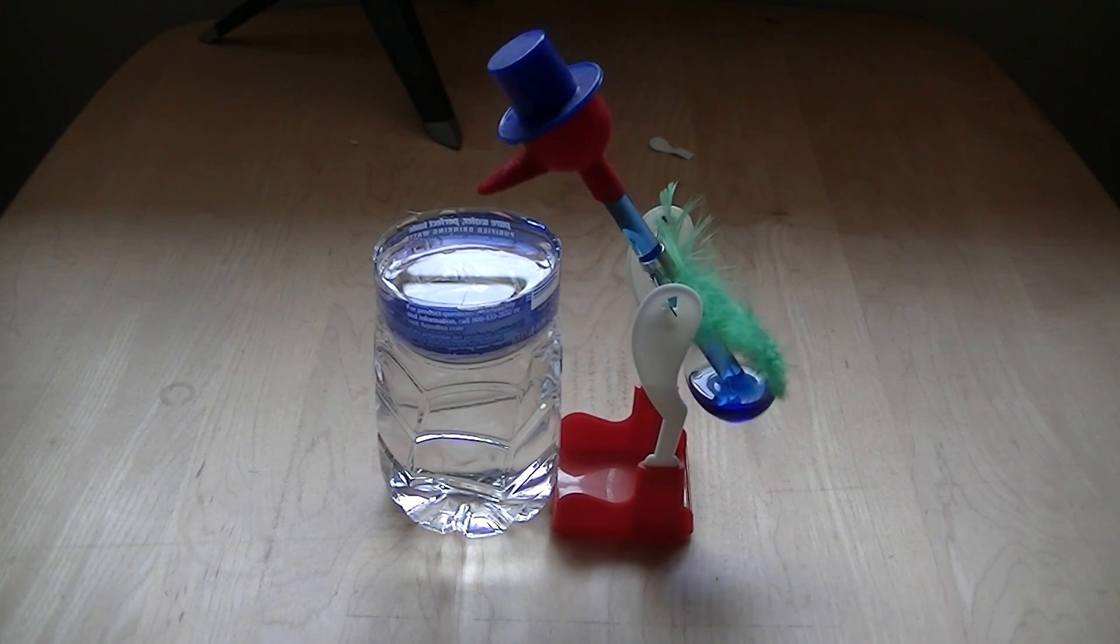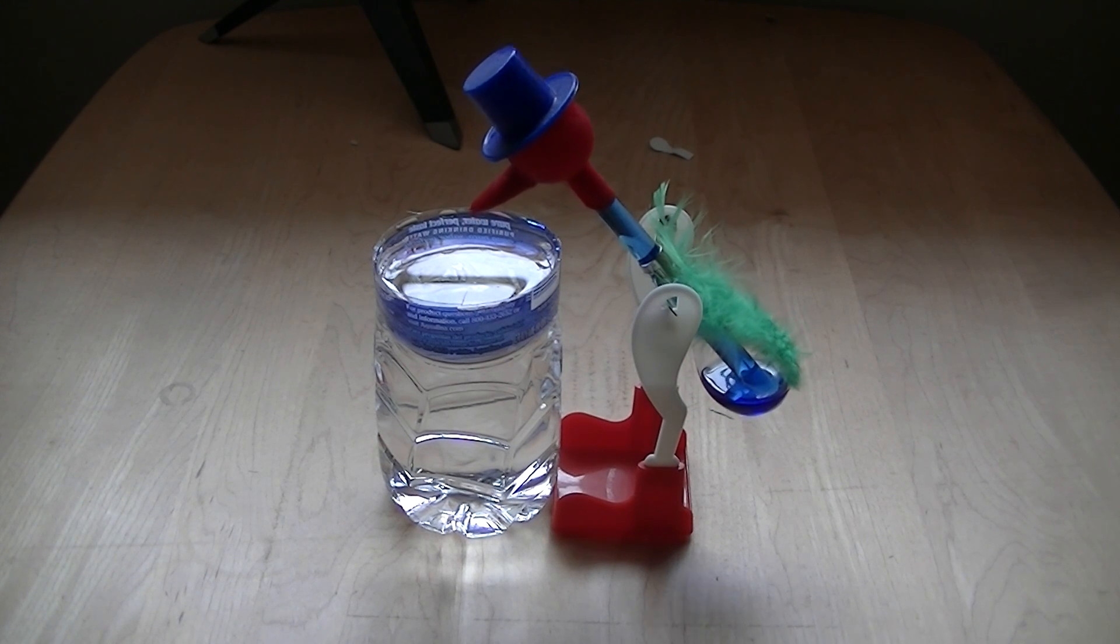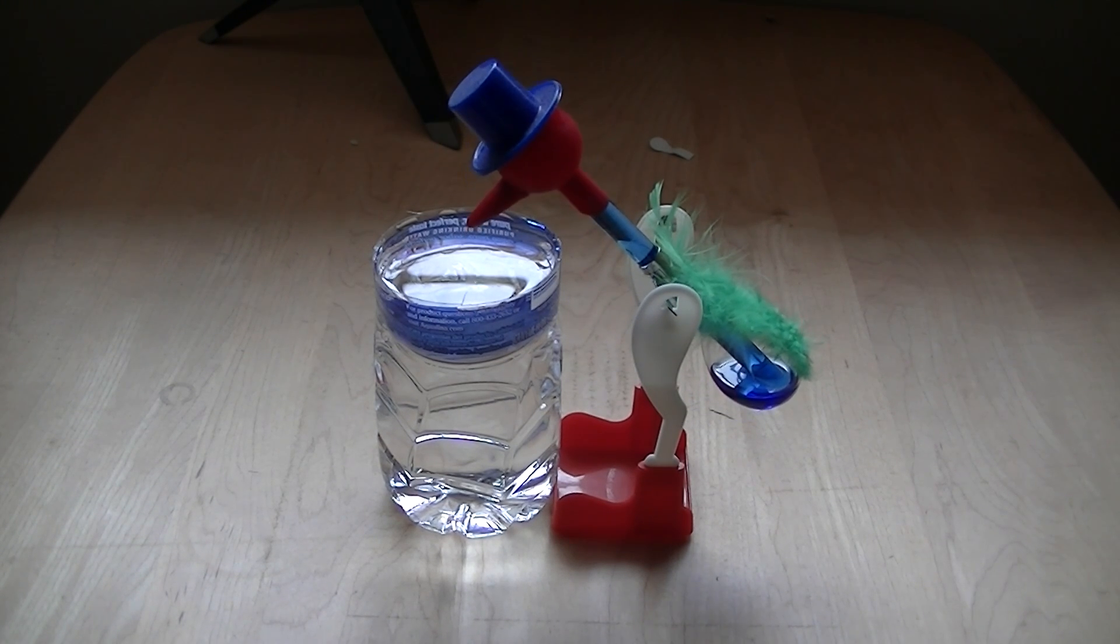The temperature difference between the head and the base allows the liquid to be pushed up from the base and as the liquid flows into the head the bird becomes top heavy and tips over during its oscillations.